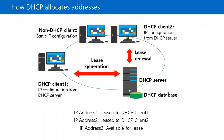DHCP allocates IP addresses on a lease basis, also called a dynamic basis. You can set a lease duration anywhere from a few minutes to unlimited. The default lease time is 8 days for wired clients and 3 days for wireless clients. When a client requests an IP address, the DHCP server offers the next available IP address from the pool configured on the DHCP server. It is also possible to reserve a particular IP address for a specific client based on the MAC address of the client's network interface.